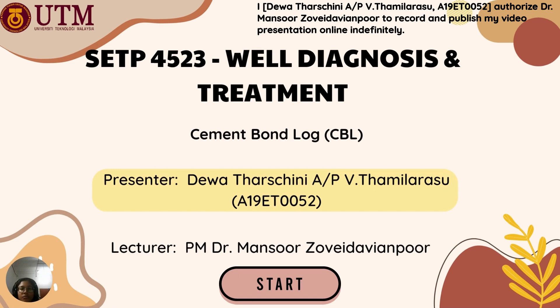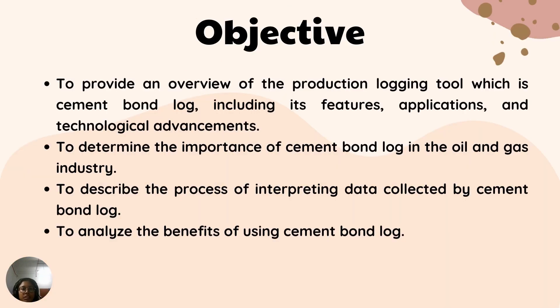Moving to the next part, which is the objective. There are four objectives. The first one is to provide an overview of the production logging tool, which is the cement bond log, including its features, applications, and technological advancements.